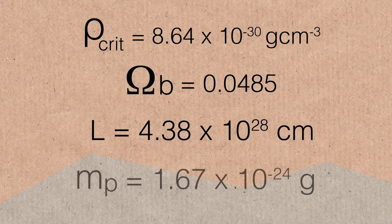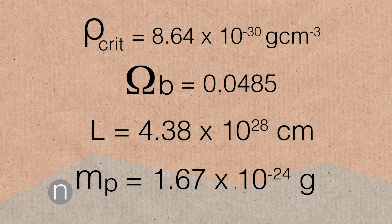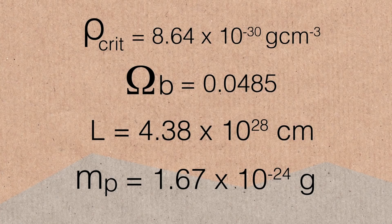The last thing we need is the mass of the proton. The baryons we're interested in are protons and neutrons — they have about the same mass, essentially identical. The mass of the proton is roughly 10 to the minus 24 grams. These are the four things we need to work out how many particles there are in the universe.